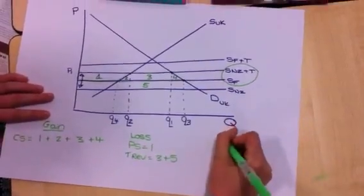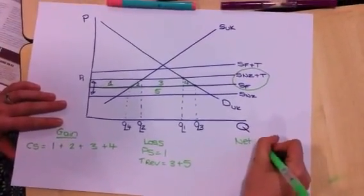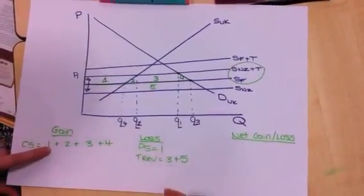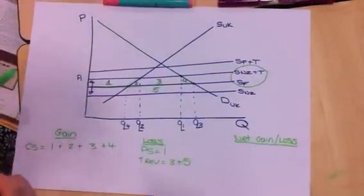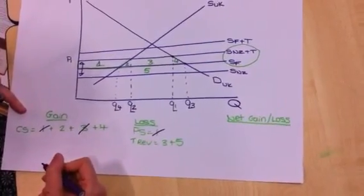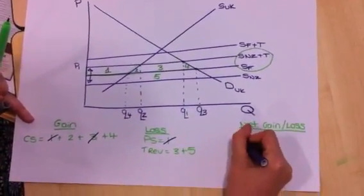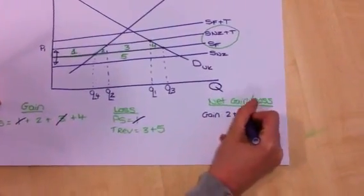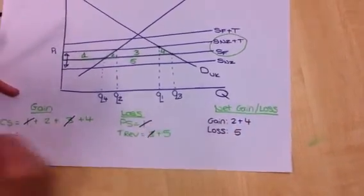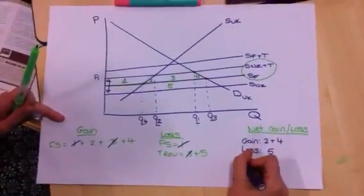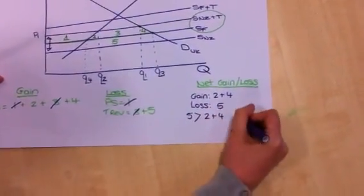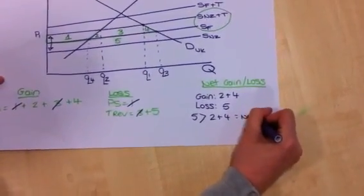Now, if we want to look at the net gain slash loss and look at the overall situation and whether it's better or worse, we just need to cancel some of these out. So, we know here, if we take one and one away, and then if we take three away, what we're left with is the gain of two plus four and a loss of five. I didn't put that one out. So, if five, the space of five or the value of five, is larger than two add four, then that equals a net loss. If five is smaller than two add four, that equals a net gain.